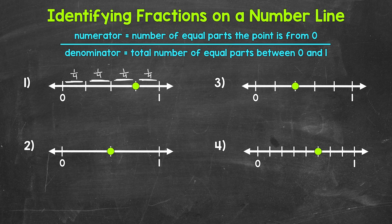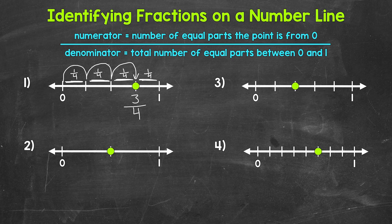Four is our denominator. Now we need to figure out our numerator. That's going to be the number of equal parts the point is from zero. So going from zero here, we are one, two, three equal parts away from zero.